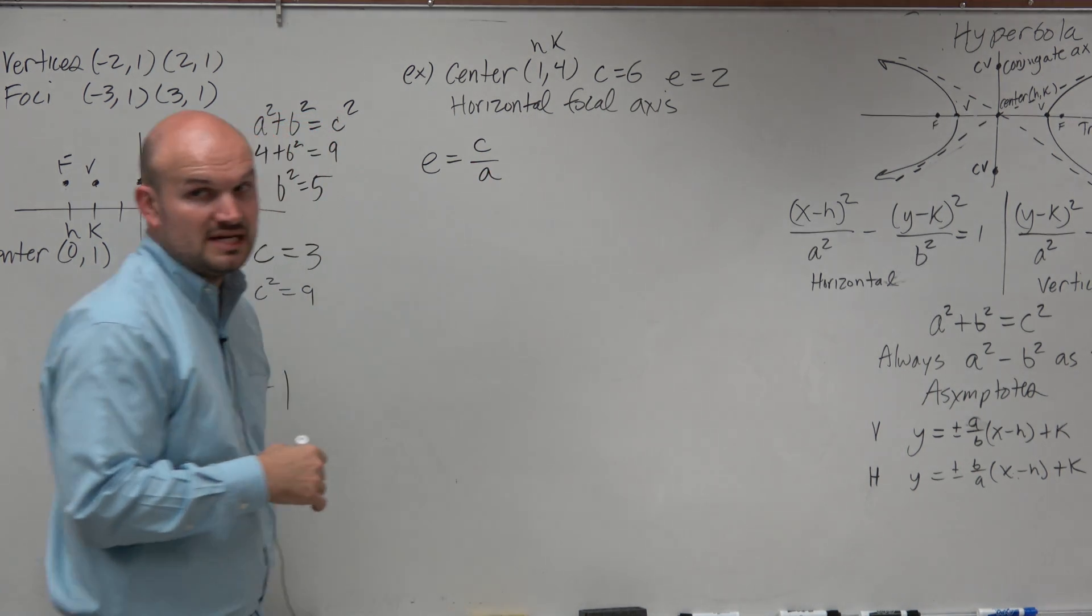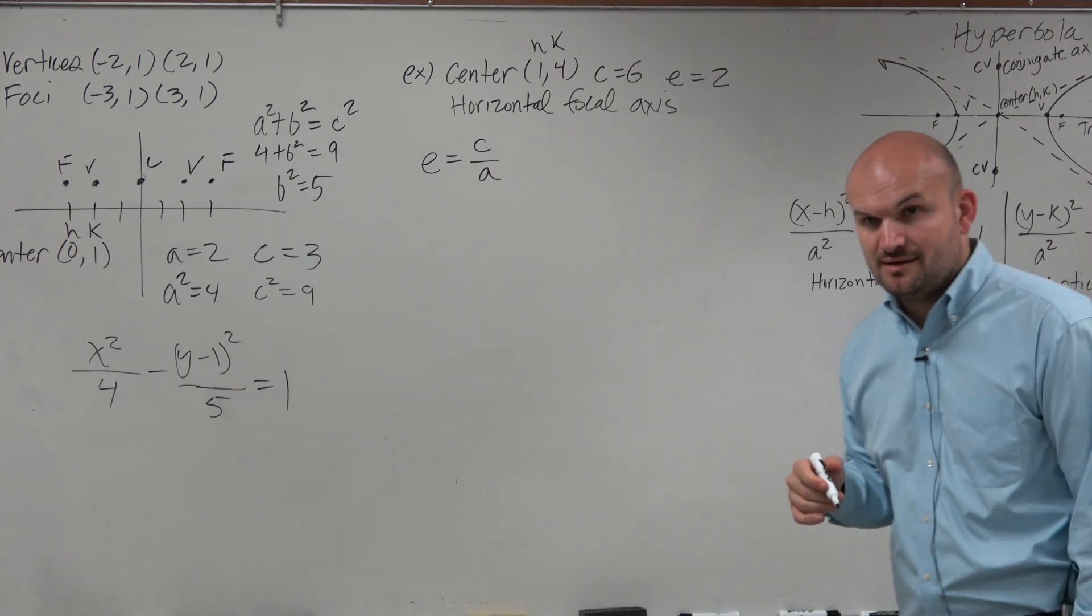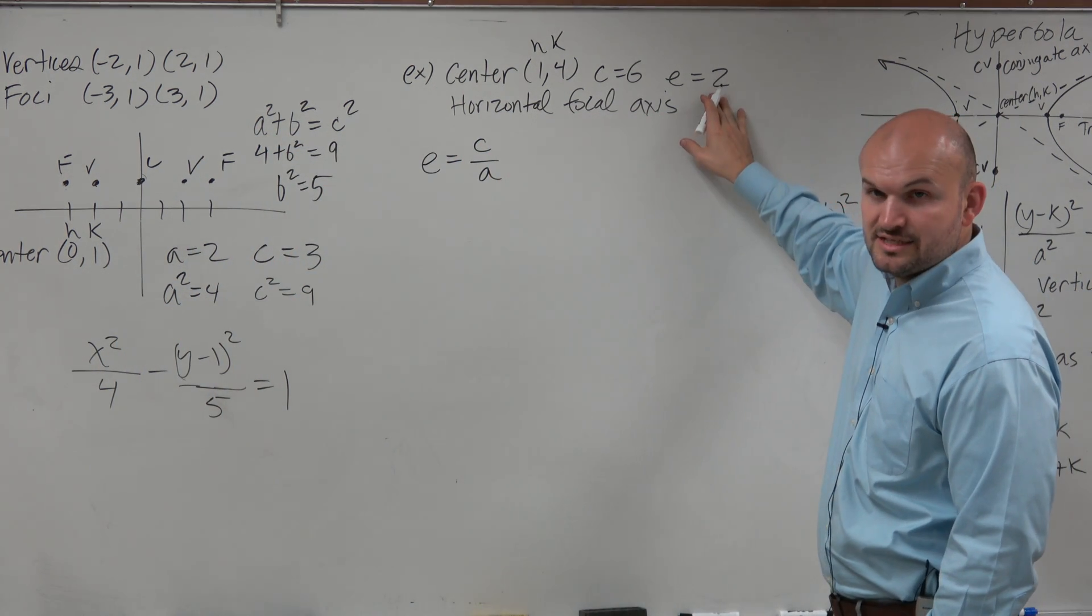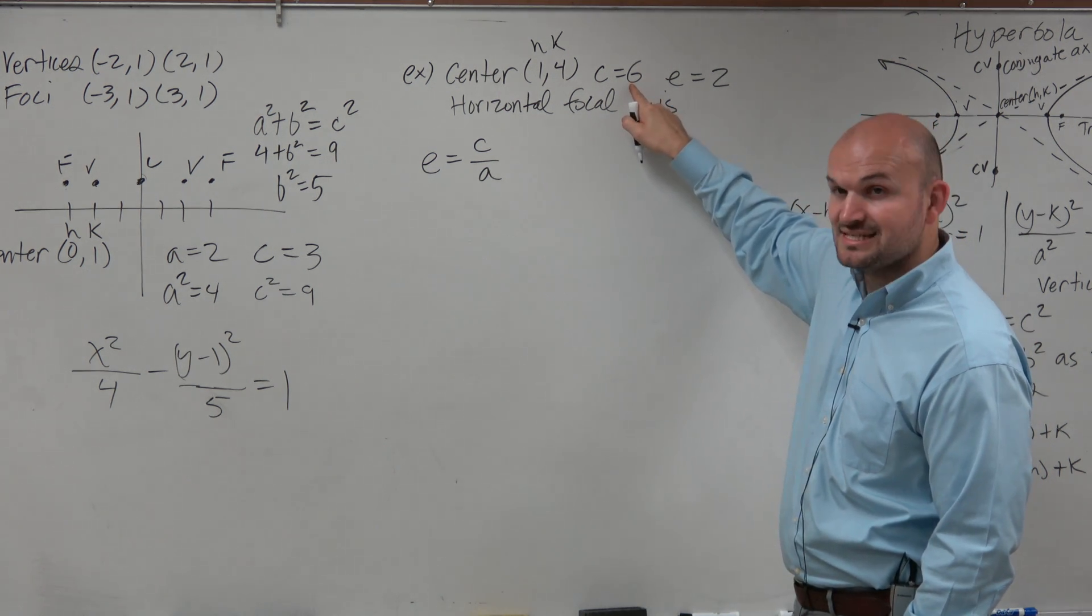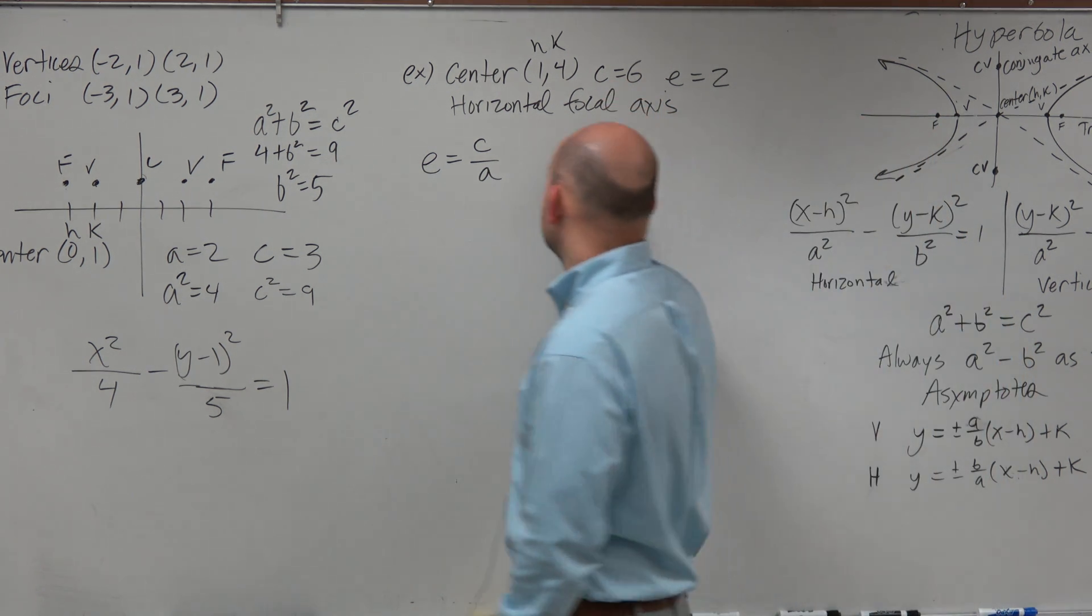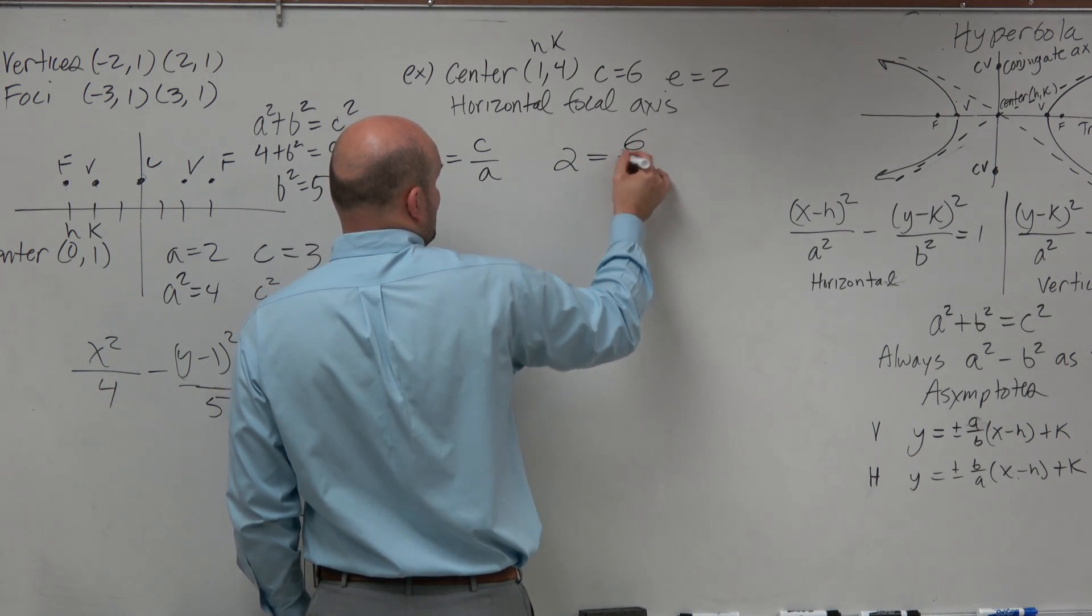Yes, it was on your notes from the last section. So eccentricity is c over a. OK. So they're saying the eccentricity is 2, but they're saying that 6 is c. So basically your eccentricity, which is 2, is equal to c, which is 6, over a.